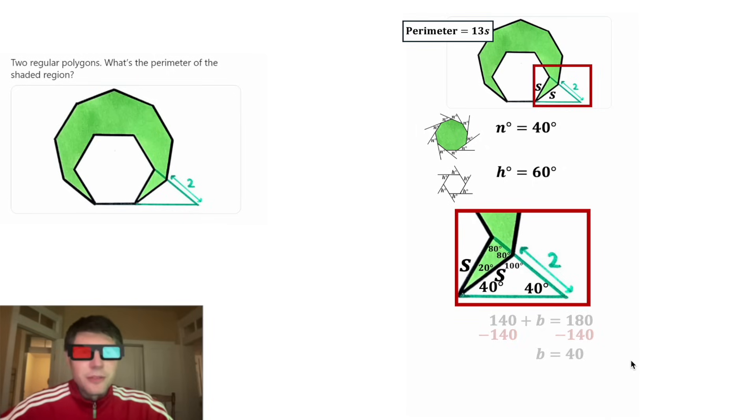And now we don't need this stuff anymore. Now looking at this triangle right here, since these two base angles are equal to 40, that means it's an isosceles triangle, and these two sides are congruent. Since this side is S, this side would also be S. And we also know this side is equal to 2, so we can say S is equal to 2.